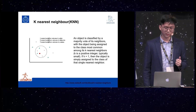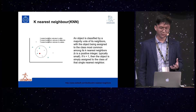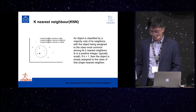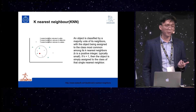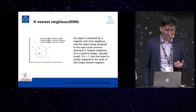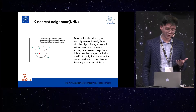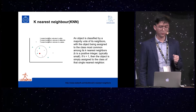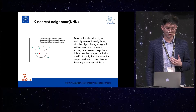Another one is k-nearest neighbors. In the k-nearest neighbors algorithm, an object is classified by a majority vote of its neighbors. In this dataset, the red dot is a new input, and we need to classify it. If k equals 1, the outcome is a plus. If k equals 2, the outcome is unknown. If k equals 5, then it's a minus.